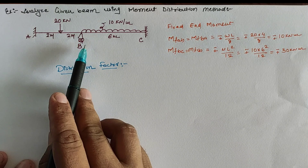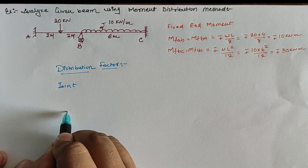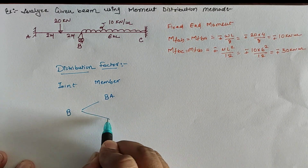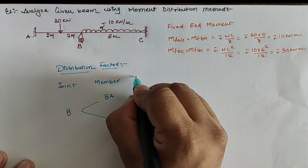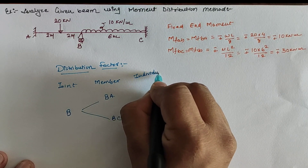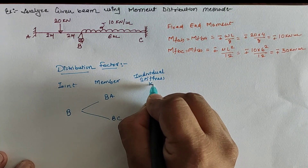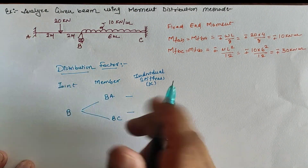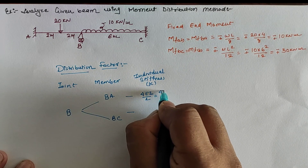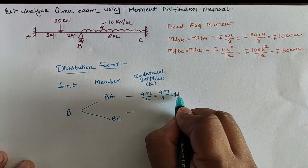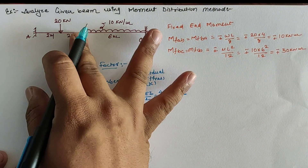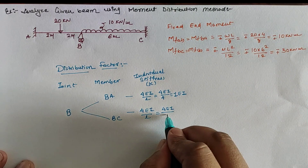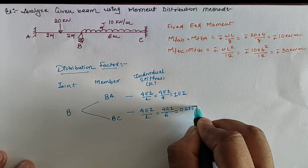Now concentrating on the intermediate joint B, which is connected through member BA span and BC span. Individual stiffness k is calculated as follows: for B to A, the far end is fixed, hence k = 4EI/L. With length given as 4 meters, this gives 1·EI. For B to C, again C is fixed, hence k = 4EI/L. With length given as 6 meters, the value is 0.67·EI.